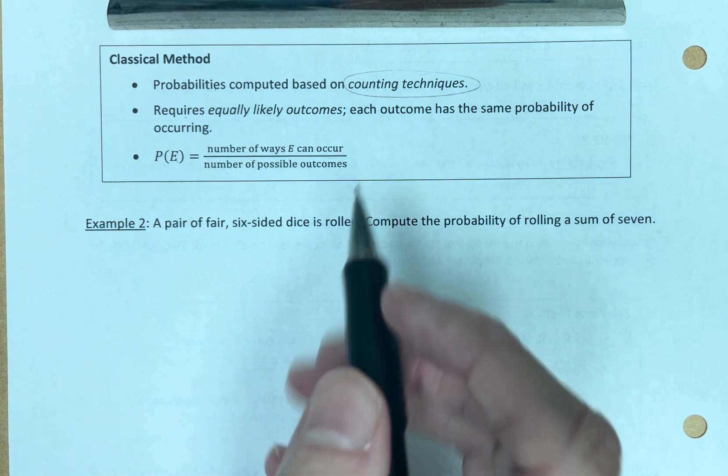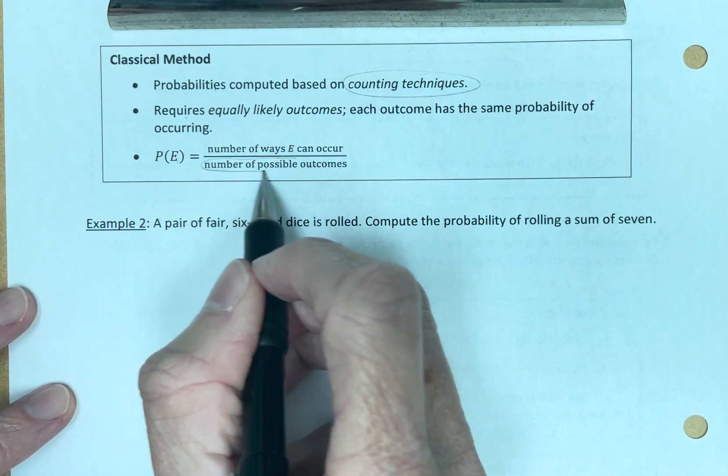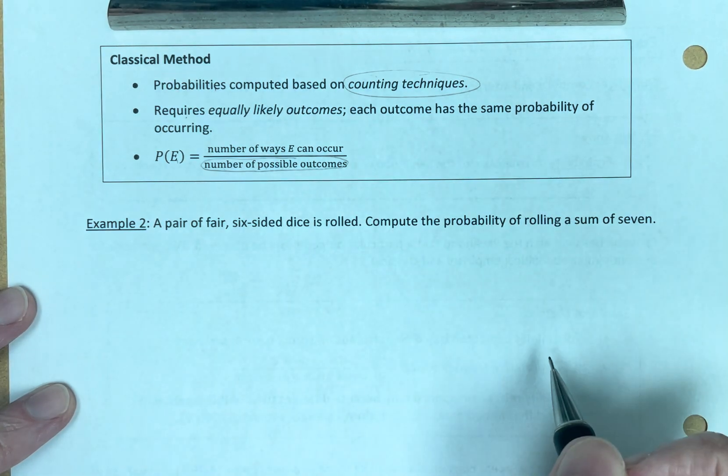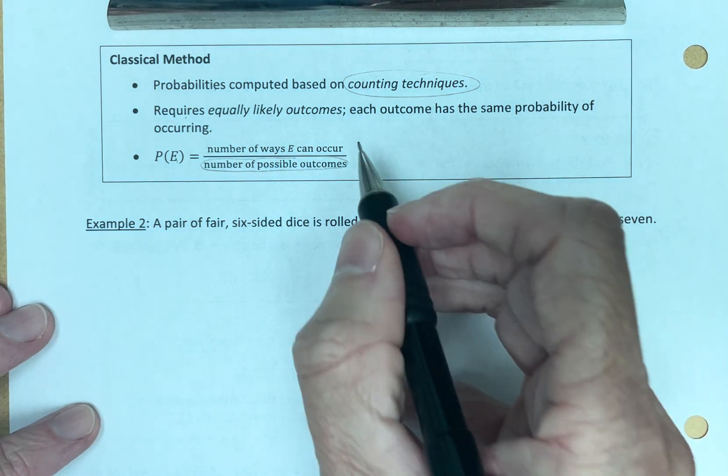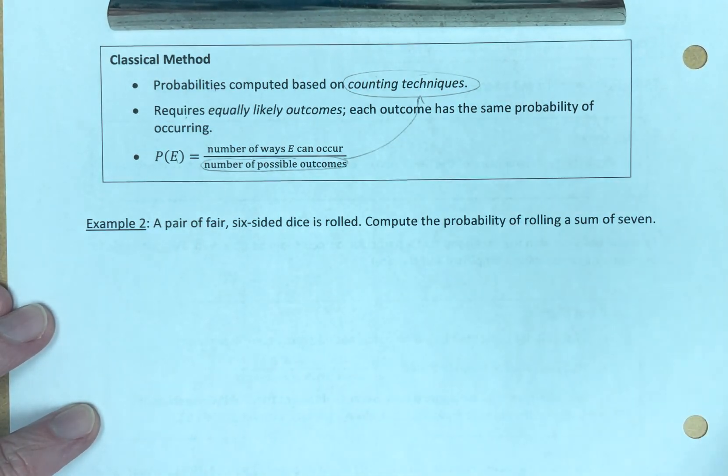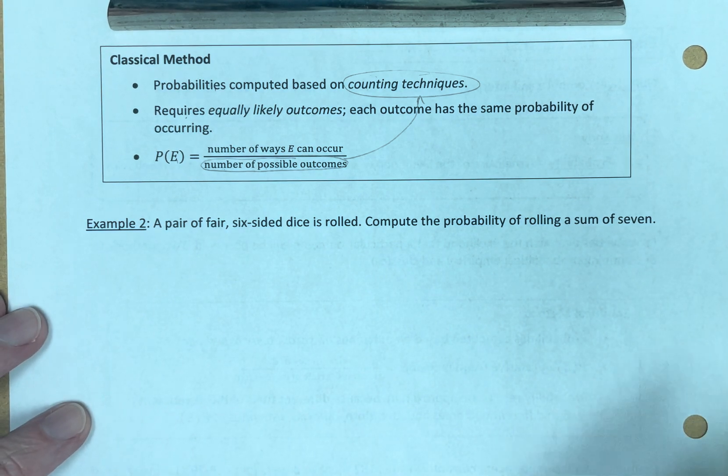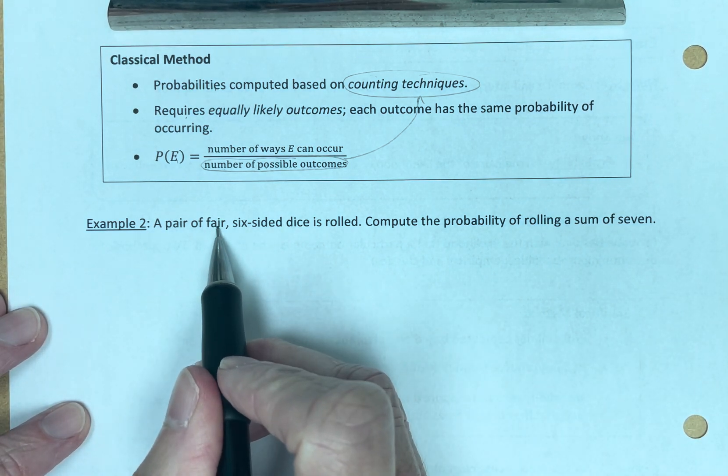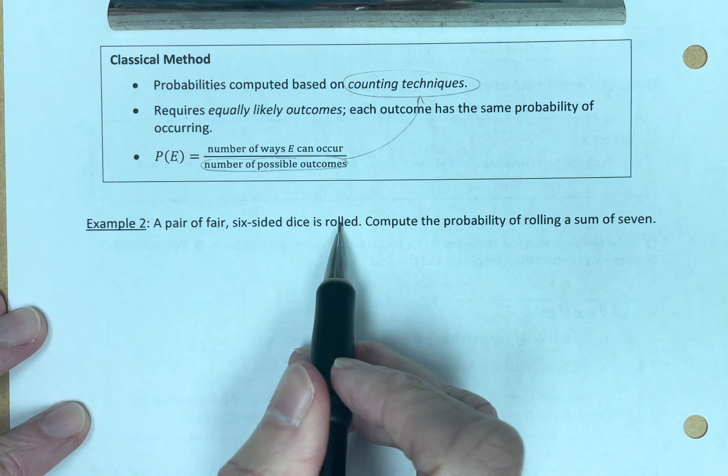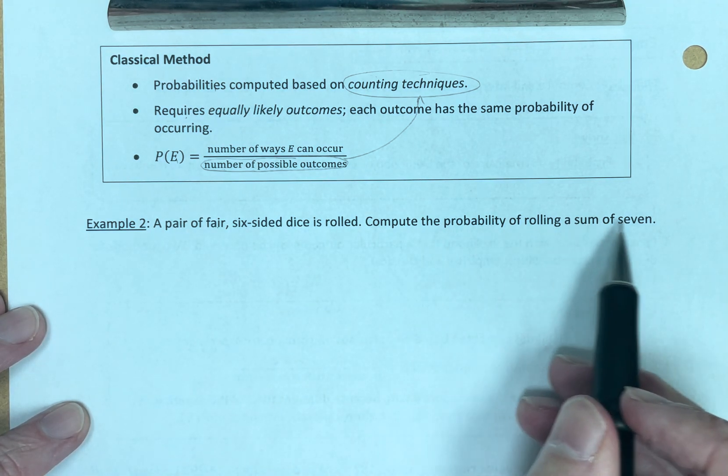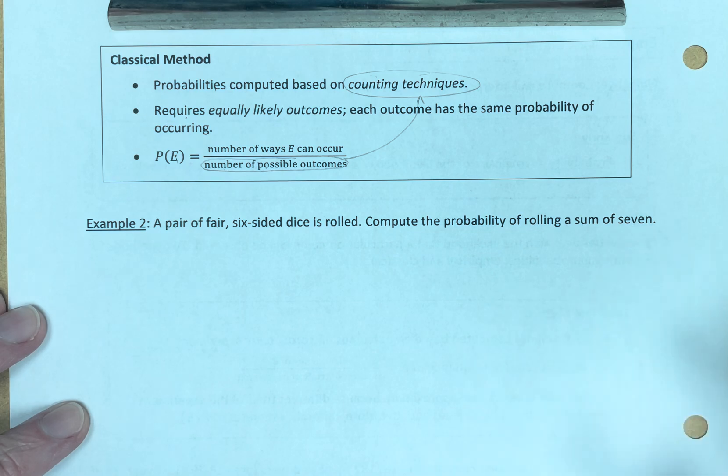Number of possible outcomes. The denominator, number of possible outcomes. We're going to calculate that mathematically, and that is part of our counting techniques. A pair of fair, six-sided dice is rolled. Compute the probability of rolling a sum of seven. We're not going to do an experiment and roll the die 35 times. We're going to come up with a probability using counting techniques.